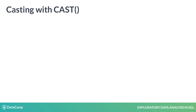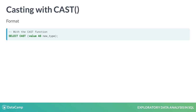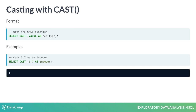Values can be converted temporarily from one type to another through a process called casting. When you cast a column as a different type, the data is converted to the new type only for the current query. To change a value's type, use the cast function. First, specify the value you want to cast — this can be a single value or the name of a column. Then use the keyword AS. Finally, specify the name of the type you want to convert the data to. Here's an example of casting the single numeric value 3.7 as an integer. Casting from numeric to integer rounds the value to the nearest integer, which is 4.